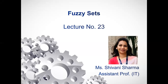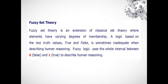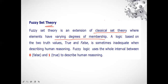Starting with the next point: fuzzy sets. A fuzzy set is the extension of classical set theory. In classical set theory, we have the crisp set, where the membership function is always either zero or one — either true or false. But when we have a varying degree of membership lying between zero and one, we use fuzzy set theory.